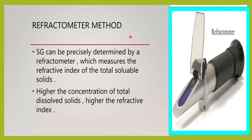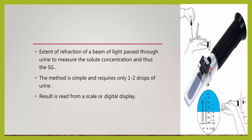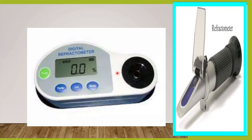Next is the refractometer method. Here the specific gravity can be precisely measured. It measures the refractive index of the total soluble solids. Agar urine mein zyada dissolved solids hai — zyada concentrated urine hai — toh zyada uska refractive index rahega and specific gravity zyada aayega. The degree of refraction of the beam of light depends upon the concentration of solutes present. This is a very simple method — needs only 1 to 2 drops of urine — and you can also read the result on a digital refractometer.